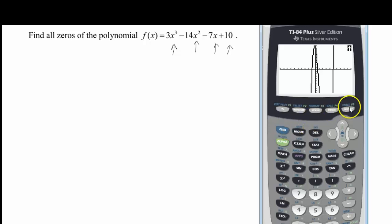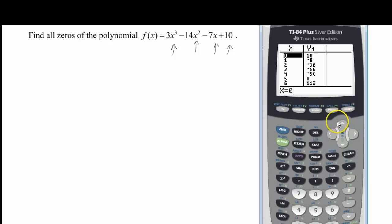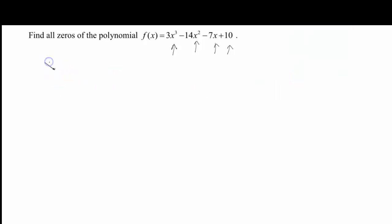Let's take a look at the table and see if we get lucky and have any of them occur at integers. So I see one down here at 5, 0, because a 0 means that your y value is 0. So I know that one of my zeros is going to be at x equals 5.